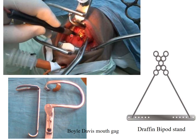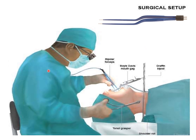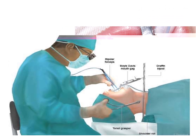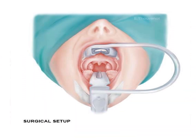The tonsil holding forceps and suction are used; the suction also removes smoke during cautery. The snare is used once you reach the lower pole — you either cut with scissors or with the snare. The Boyle-Davis mouth gag has rubber padding to prevent injury to the teeth; alternatively, a gauze piece can be placed. This is the endotracheal tube, the tongue depressor, with the tonsils visualized.